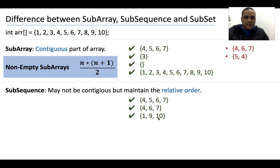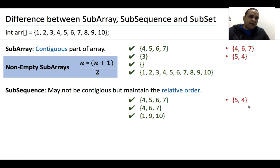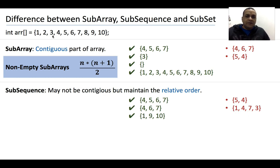1, 9, 10 is also a subsequence of the original array because 1, 9, and 10 have the same relative order in the original array. 5, 4 is not a subsequence because the relative order of 5 and 4 is different — in the original array 4 comes before 5, but here 5 comes before 4. Similarly, 1, 4, 7, 3 is not a subsequence because 3 appears between 1 and 4 in the original array but appears at the end here. All subarrays are also subsequences, but a subsequence may or may not be a subarray.